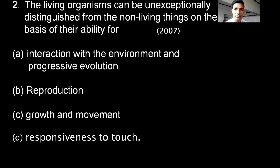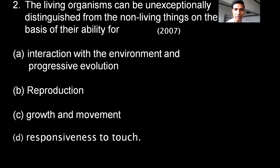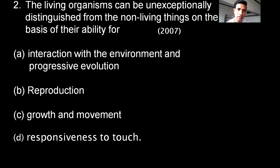Next question: The living organisms can be unexceptionally distinguished from non-living things on the basis of their ability. Option A: Interaction with the environment and progressive evolution. Option B: Reproduction. Option C: Growth and movement. Option D: Responsiveness to touch. The correct option is D — responsiveness to touch.